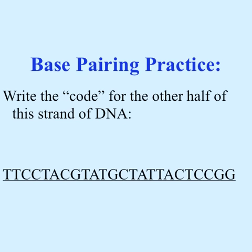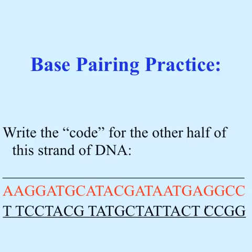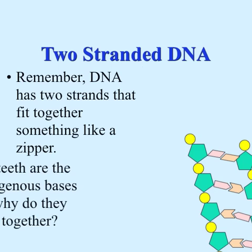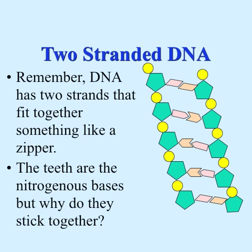To write the code for the other half of a DNA strand, just find the opposite base for each: all T's become A's, all C's become G's, all G's become C's. So a sequence like T-T-C-C-T-A becomes A-A-G-G-A-T. The T's and A's always line up, and the C's and G's always line up. Remember, DNA has two strands that fit together like a zipper, with the nitrogenous bases as the teeth in the middle.